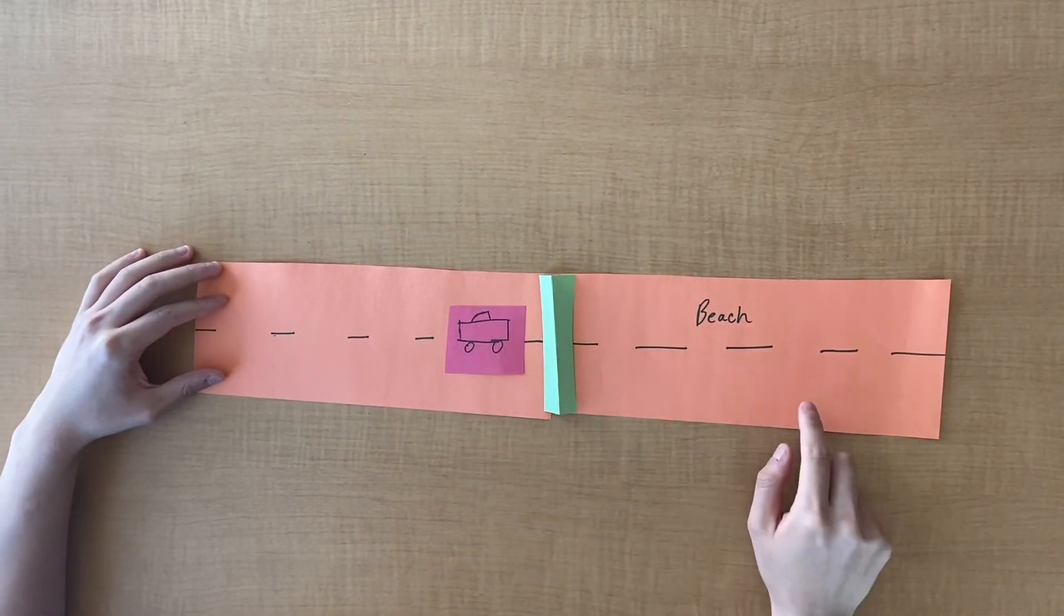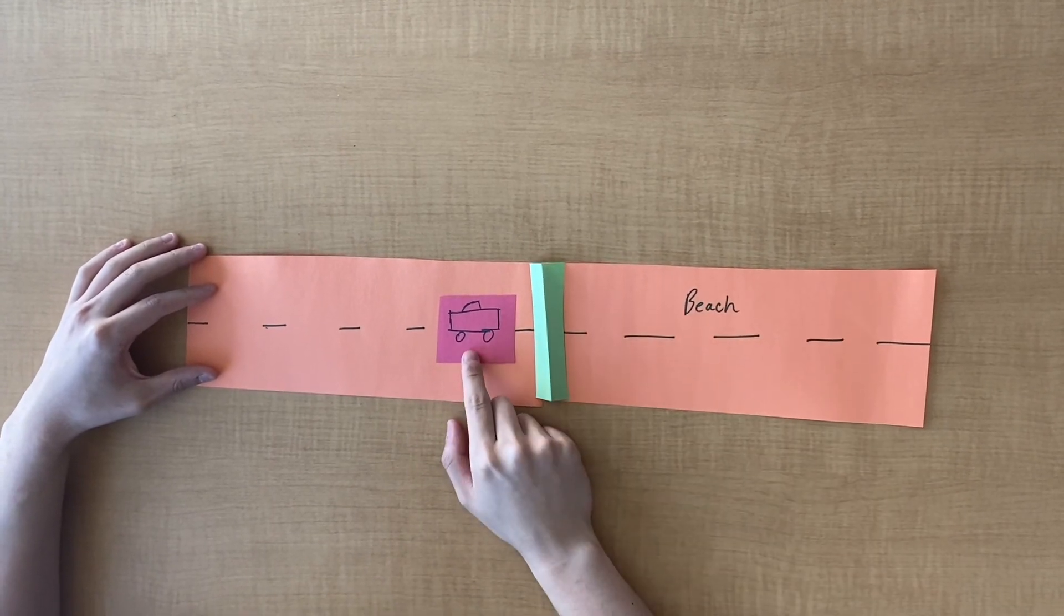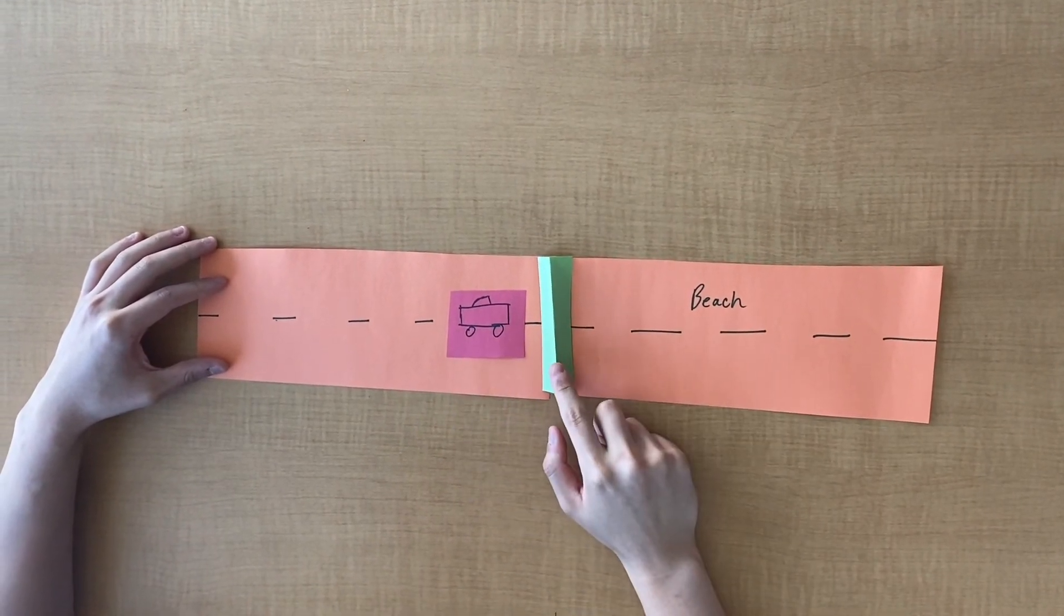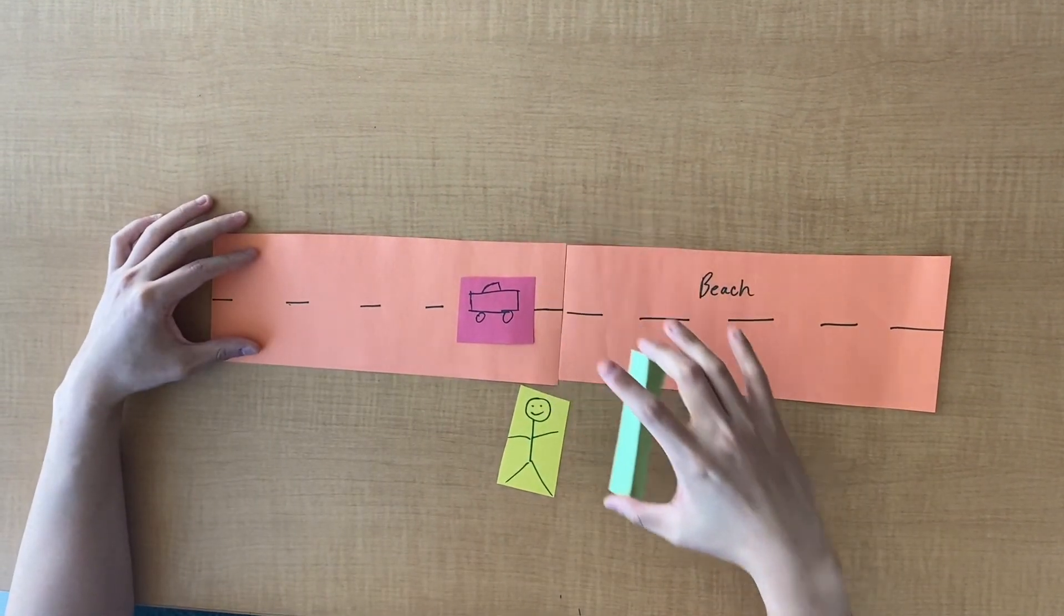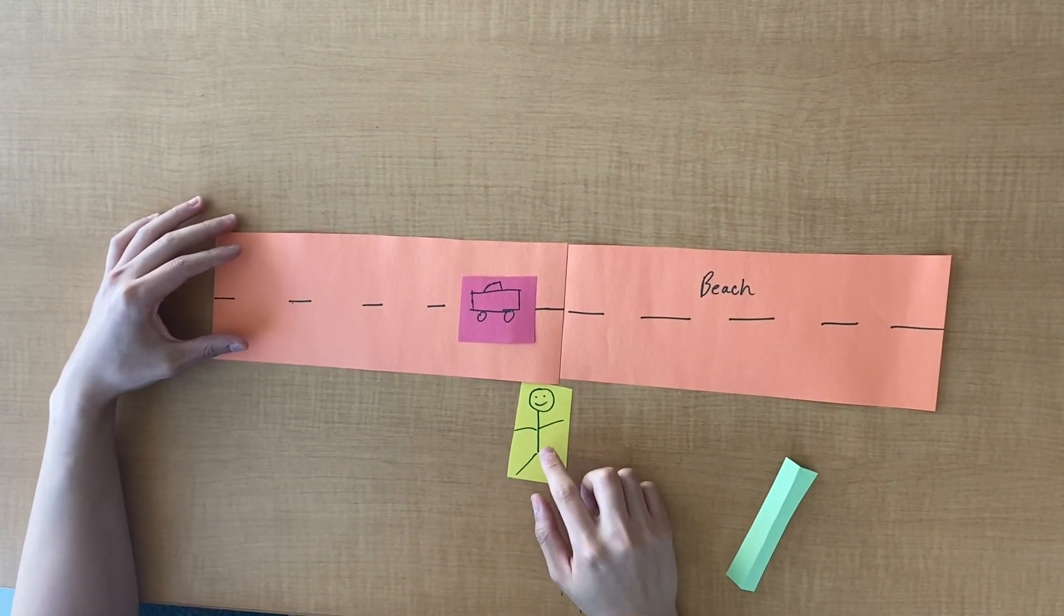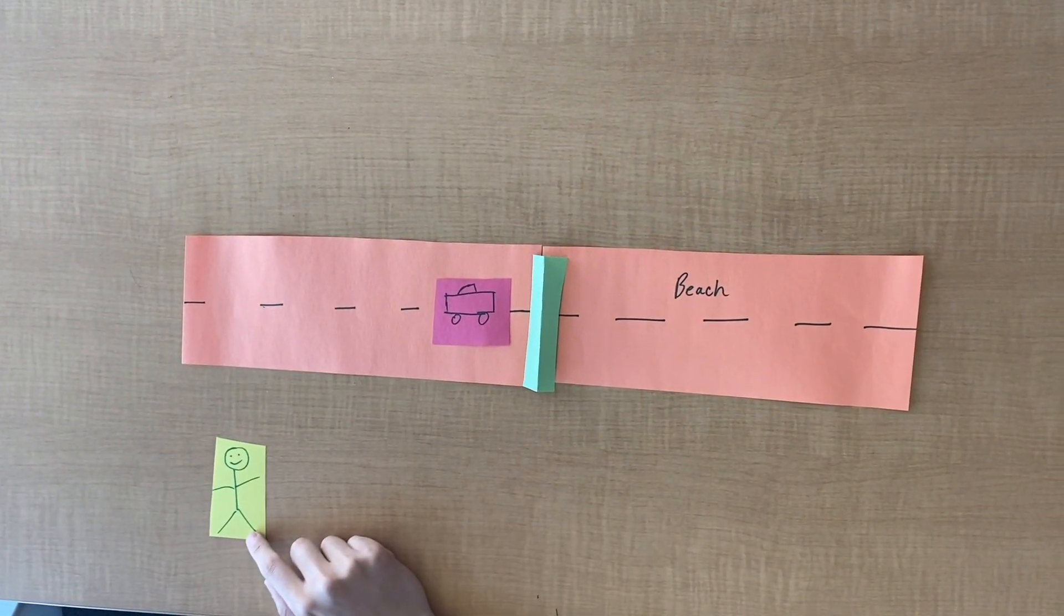In my analogy, let's say you're trying to drive to the beach, but there is a gate preventing you from driving. Driving represents transcription and the gate represents the repressor. To lift the gate, a worker has to be there. The gate stays open as long as the worker is there, but closes when the worker isn't. Thus, the worker represents the effector molecule.